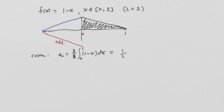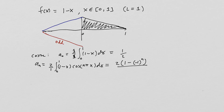To compute the a_n values we need to do a bit more work. We take two over one times the integral from 0 to 1 of (1 - x) times cosine(n pi x) dx, since L = 1. I'll skip the full integration — you can plug it into Wolfram Alpha. The goal of this class isn't lots and lots of integrals, though they do happen.